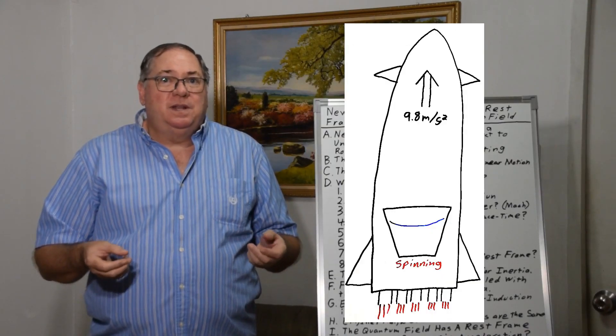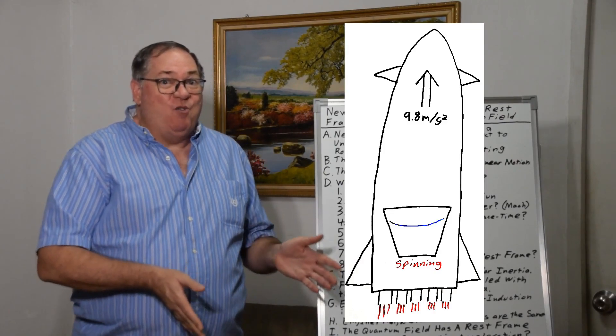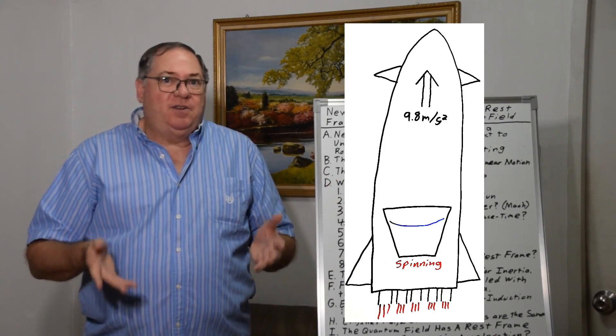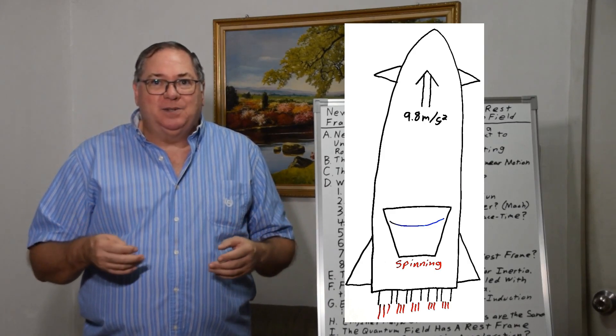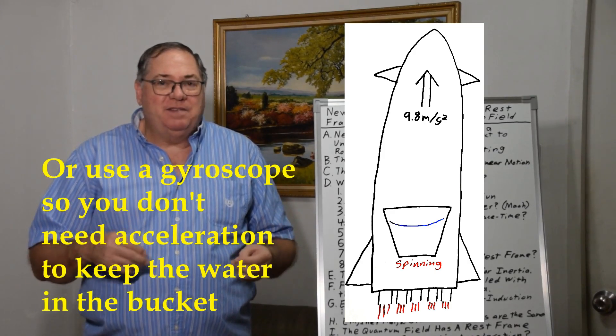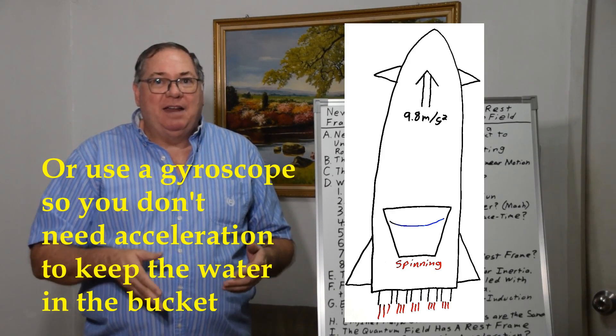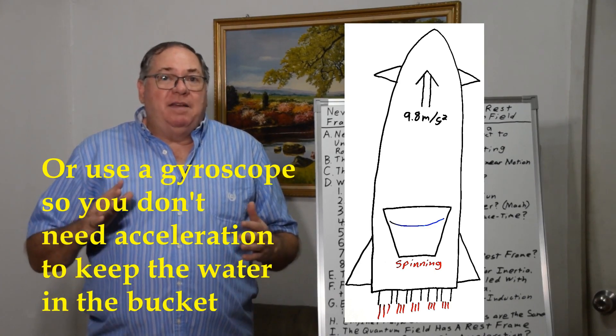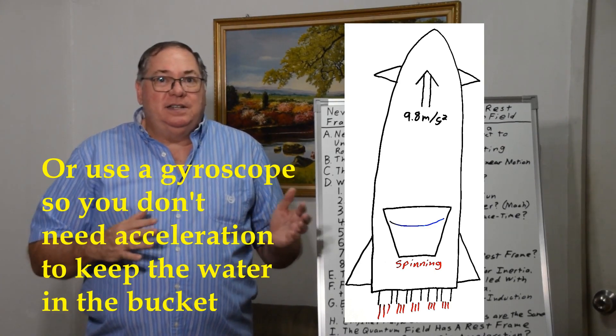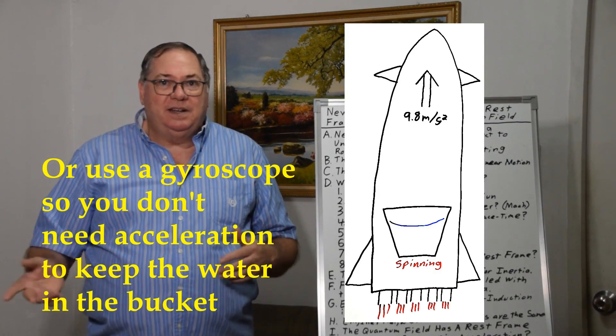You can pull one of the thought experiments from my science playbook and say if you have an elevator or a rocket that's accelerated at 9.8 meters per second squared, the gravitation of Earth, then you can suspend the bucket inside the rocket and repeat the experiment and get the same result. And you can have the rocket go in any direction relative to the Earth or the Sun. And the Earth and the Sun have no effect on the experiment.